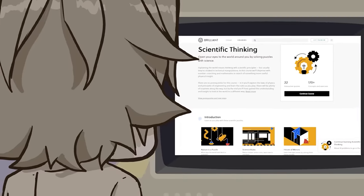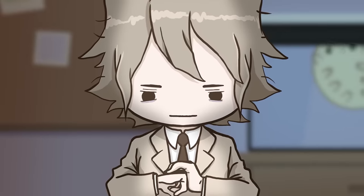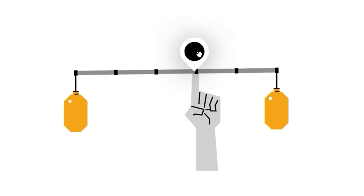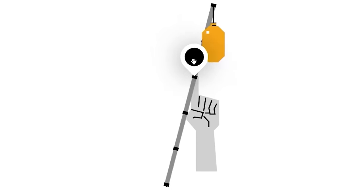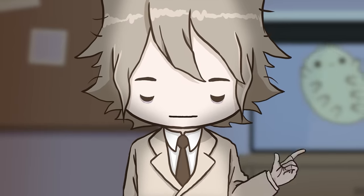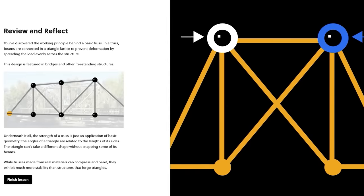I thought Brilliant's scientific thinking course would be a breeze, but as it turns out, going into a problem thinking you already have the solution is the first thing they tell you not to do. I'm having a blast learning about structural engineering, optics, even fluid dynamics.